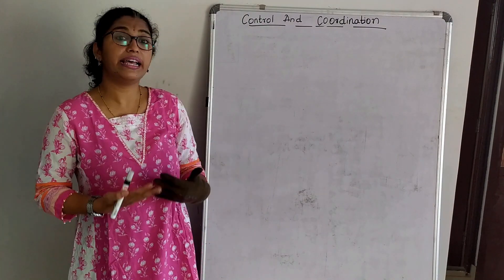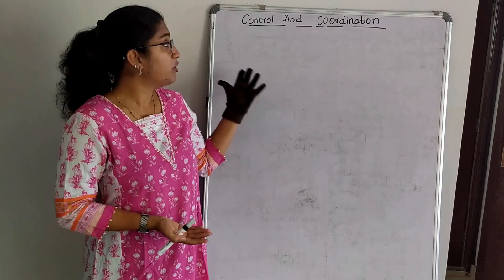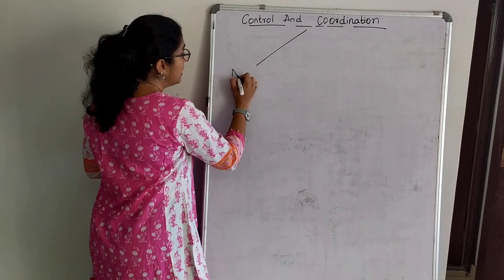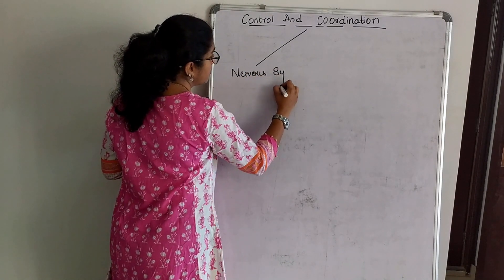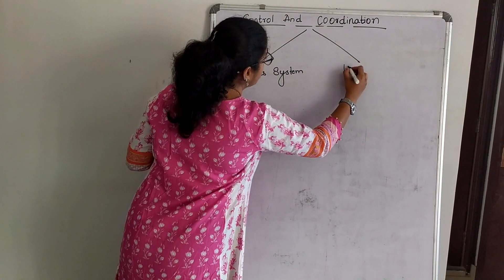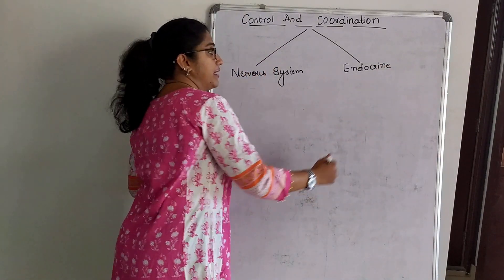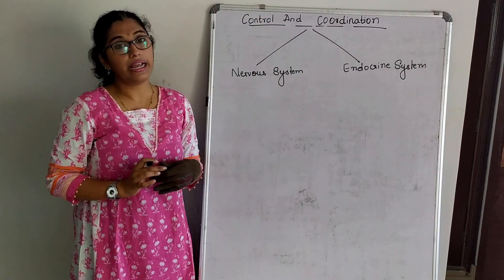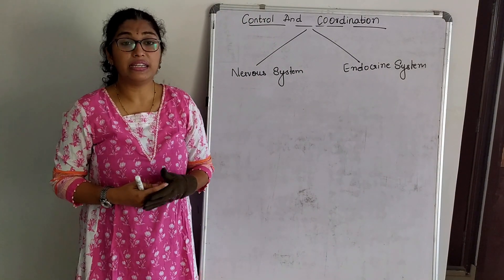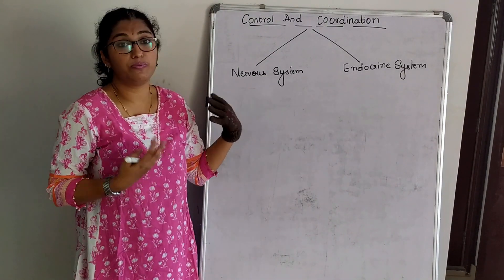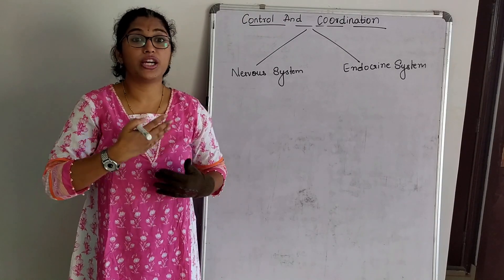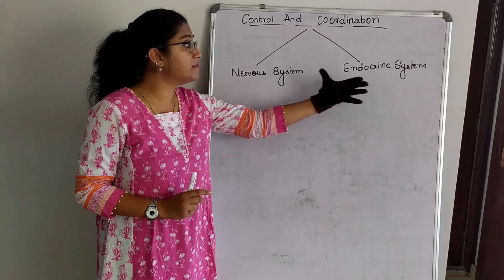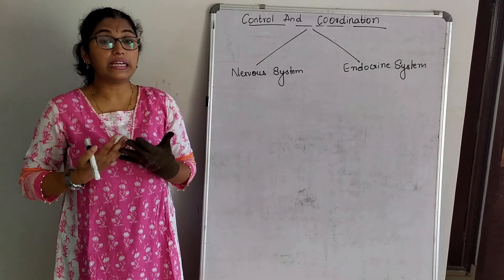So let us see how these processes help human beings to control and coordinate. When we talk about control and coordination, our body is controlled and coordinated by two main systems: the nervous system and the endocrine system. Control and coordination is all about studying the nervous system and endocrine system. In tenth grade biology, we study all about the human body.